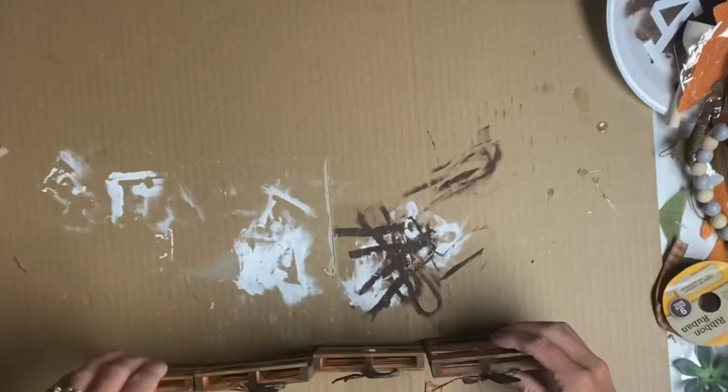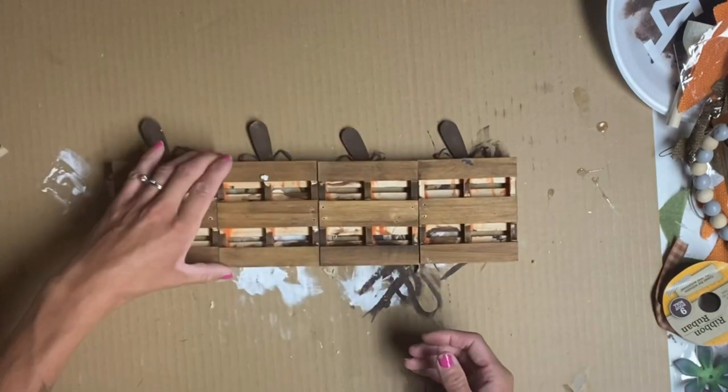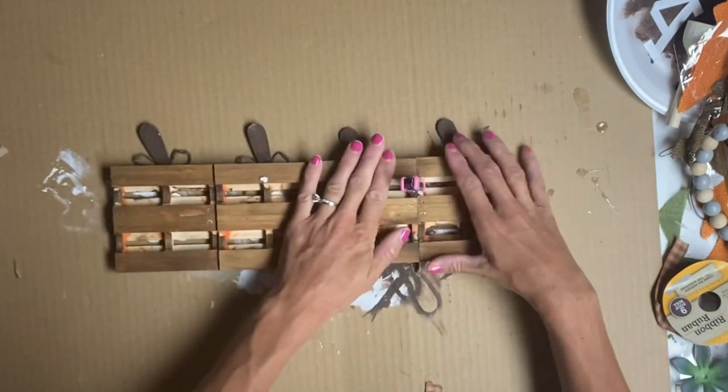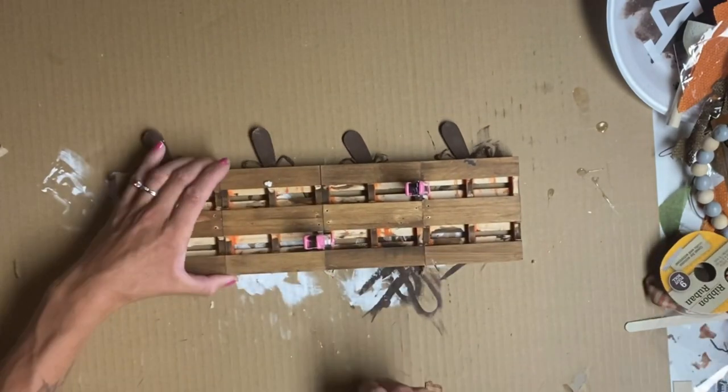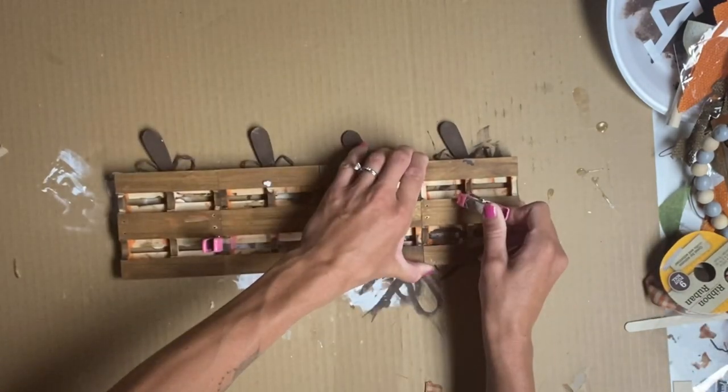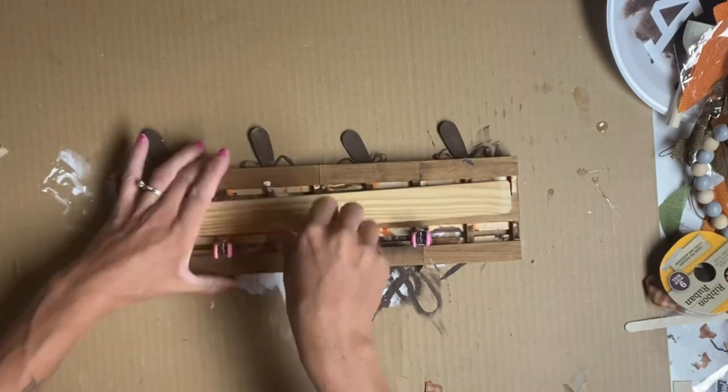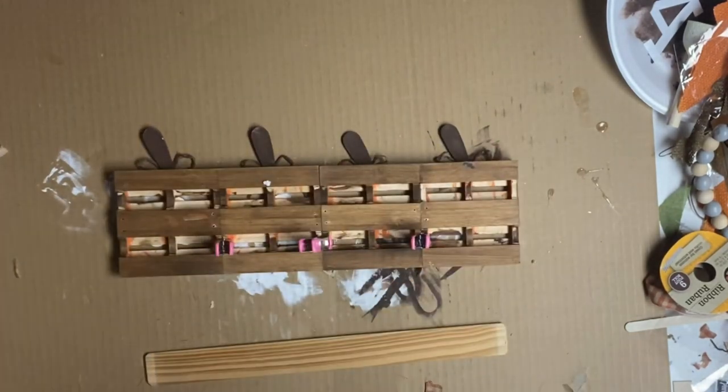I flipped each mini palette over, and using some Elmer's wood glue, I attached this ruler that I had so I could connect each palette together.